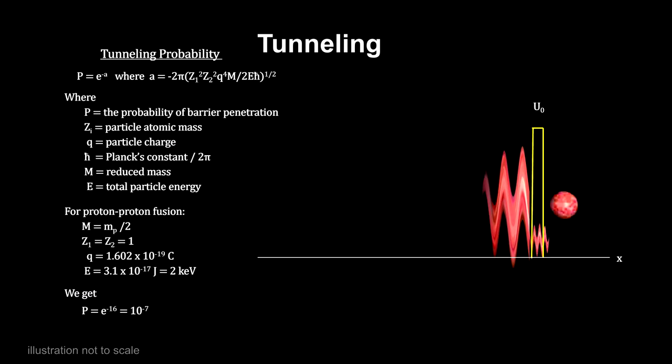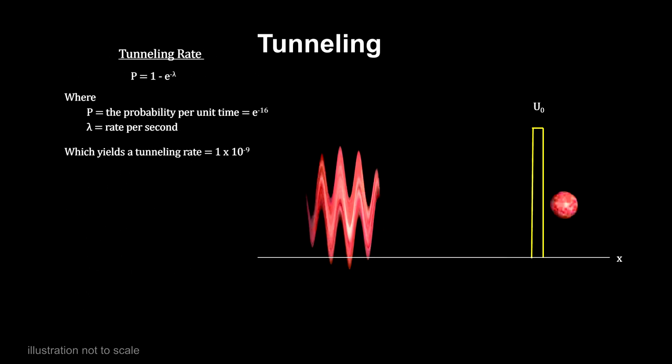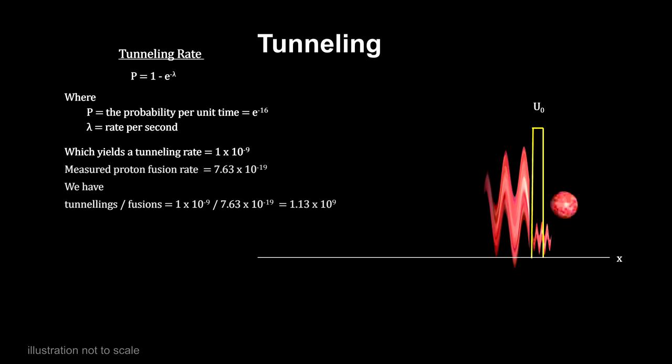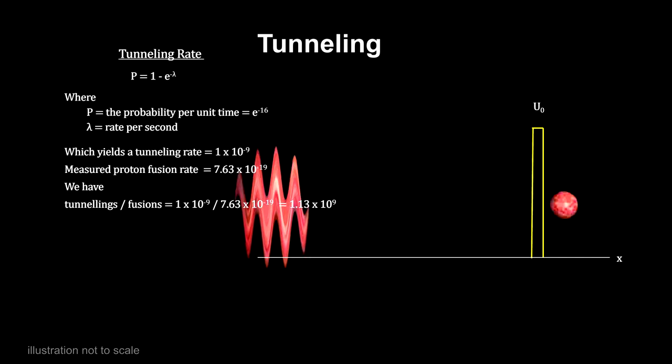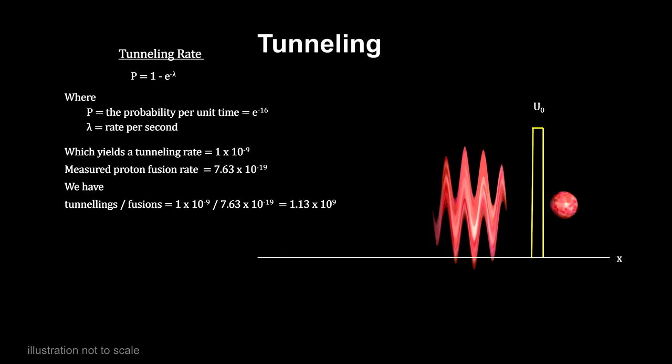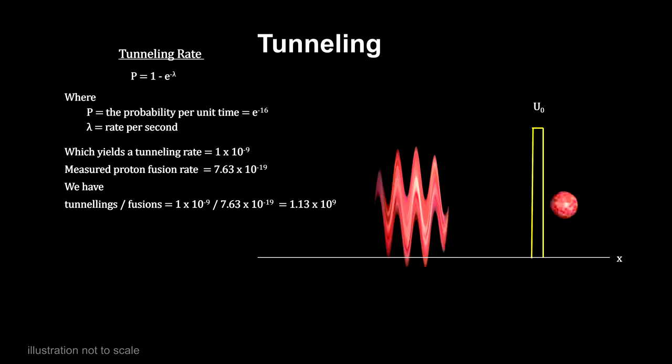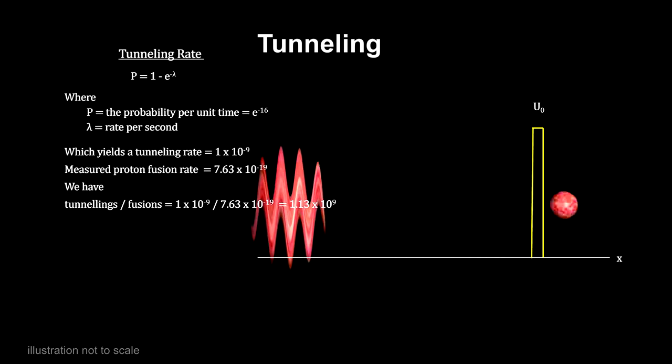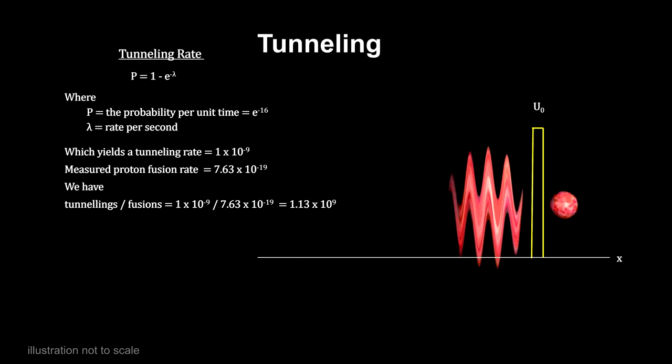Protons will cross the barrier and overlap many times before they actually trigger a fusion event. To be exact, converting probabilities to rates, we see that on average there are a million successful tunnelings through the Coulomb barrier to get one fusion.